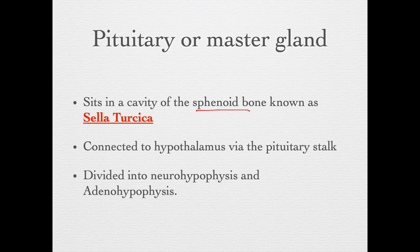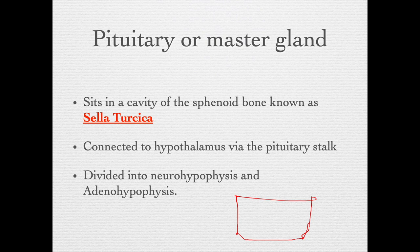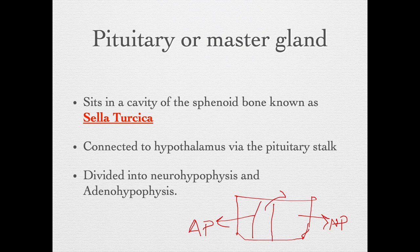The pituitary is connected to the hypothalamus, a structure present at the base of the brain, via the pituitary stalk. This connection is very important as the functioning of the hypothalamus and pituitary are very interconnected. The pituitary gland is divided into two parts: the neurohypophysis, which is the posterior part, and the adenohypophysis, which is the anterior part. The adenohypophysis is further subdivided into the anterior pituitary and the pars intermedia.